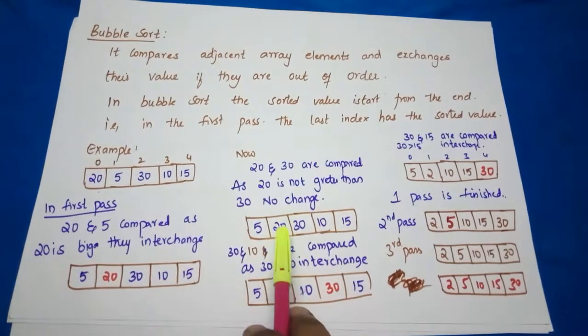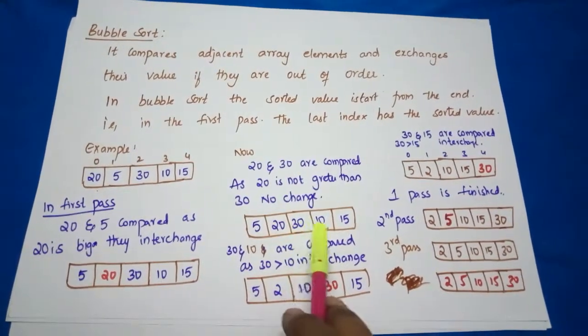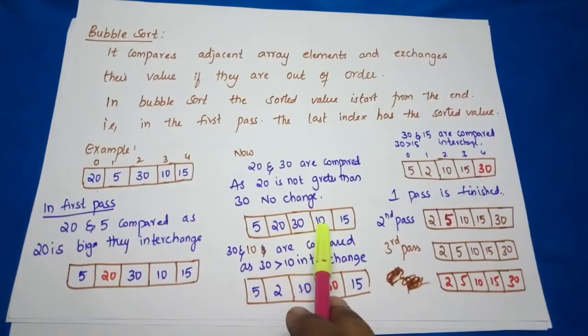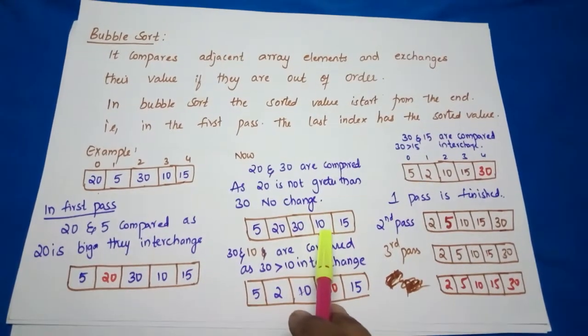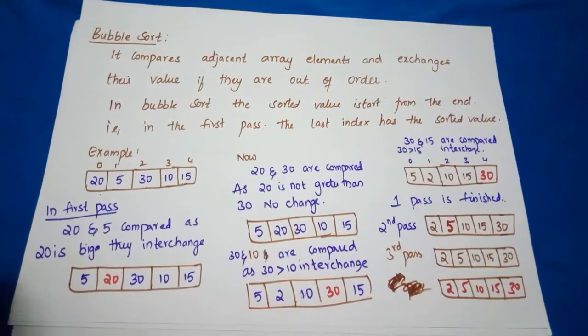In the next iteration, 20 and 30 - we'll check: 20 is greater than 30, true or false? False, so it will be the same. And next, now 20 is finished. Now 30, 10 - 30 is greater than 10, true or false? True, yes.